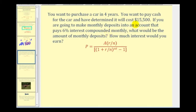Let's go ahead and give it a try. Let's say you want to purchase a car in four years, and you want to pay cash for the car, and have determined that it will cost $15,500. If you are going to make monthly deposits into an account that pays 6% interest compounded monthly, what would be the amount of the monthly deposits? And how much interest would you earn over this period?